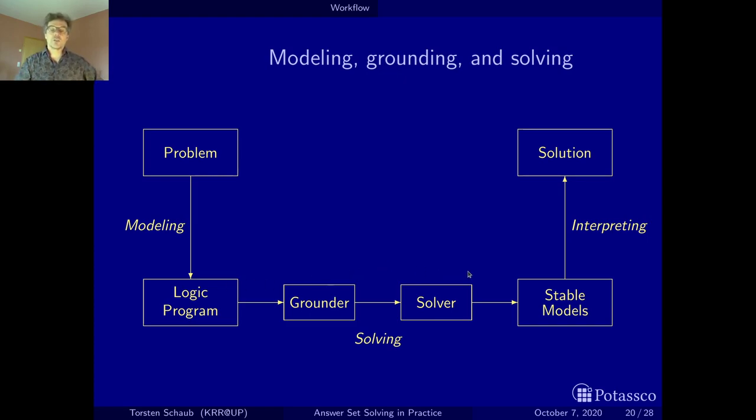The actual solving part in ASP is composed of two steps. The first step is called grounding. There, all variables are replaced systematically by all possible terms or object constants, and then we get a propositional logic program—that is, a logic program without any variables. Then the solver takes this propositional program and computes the stable models.